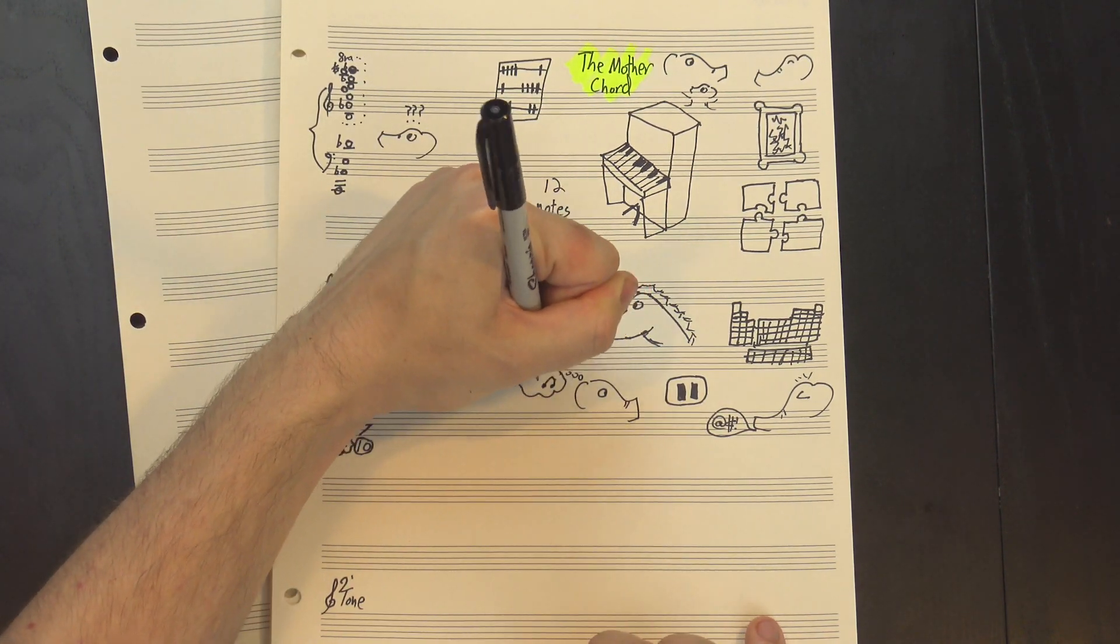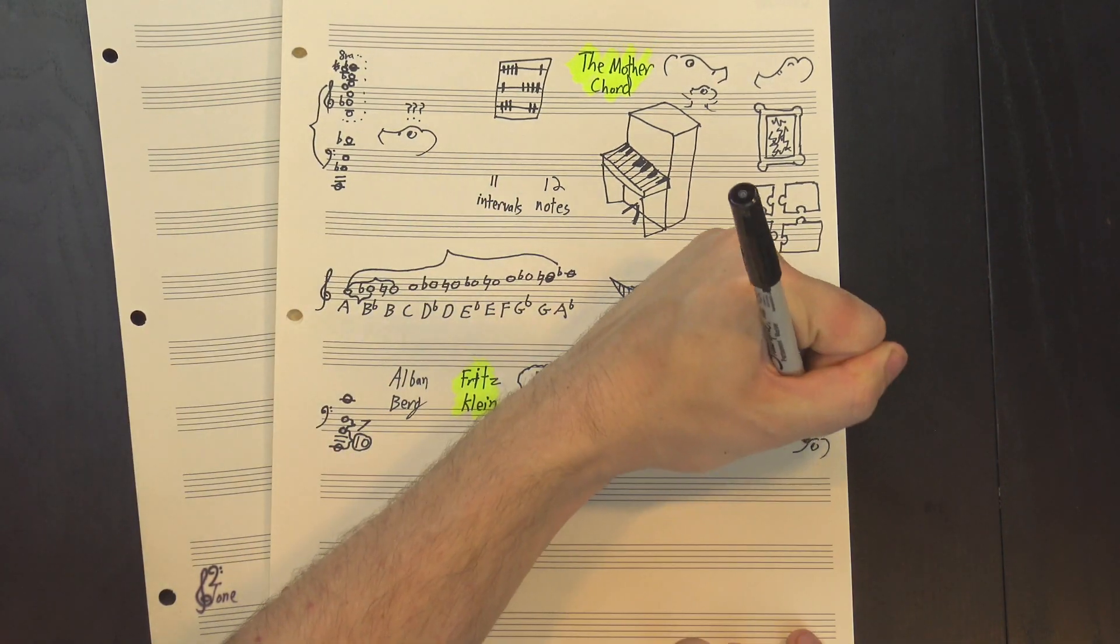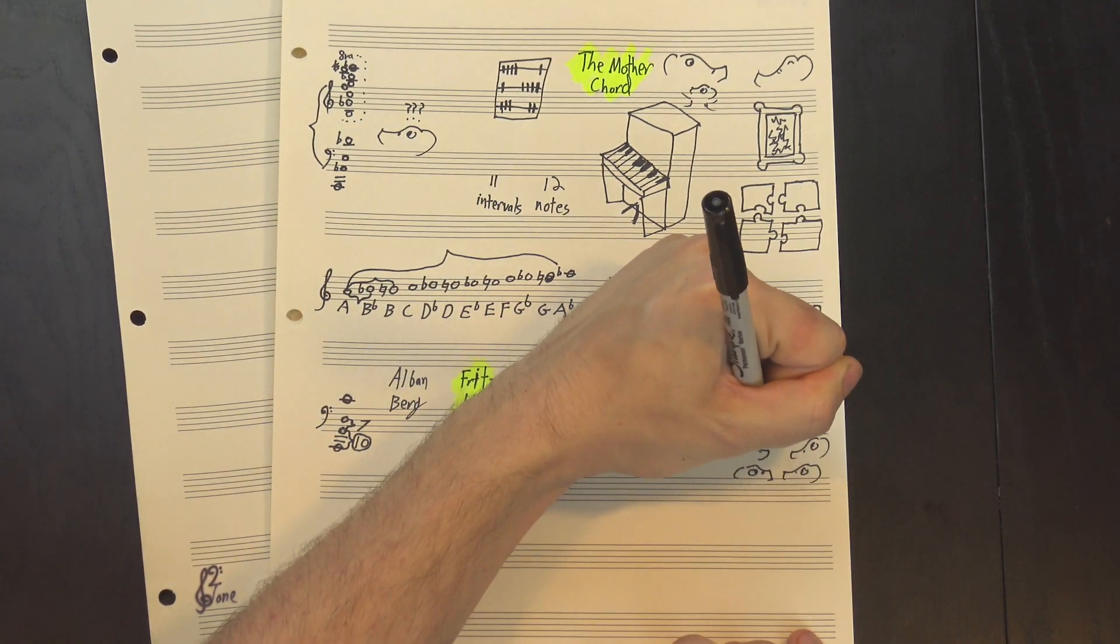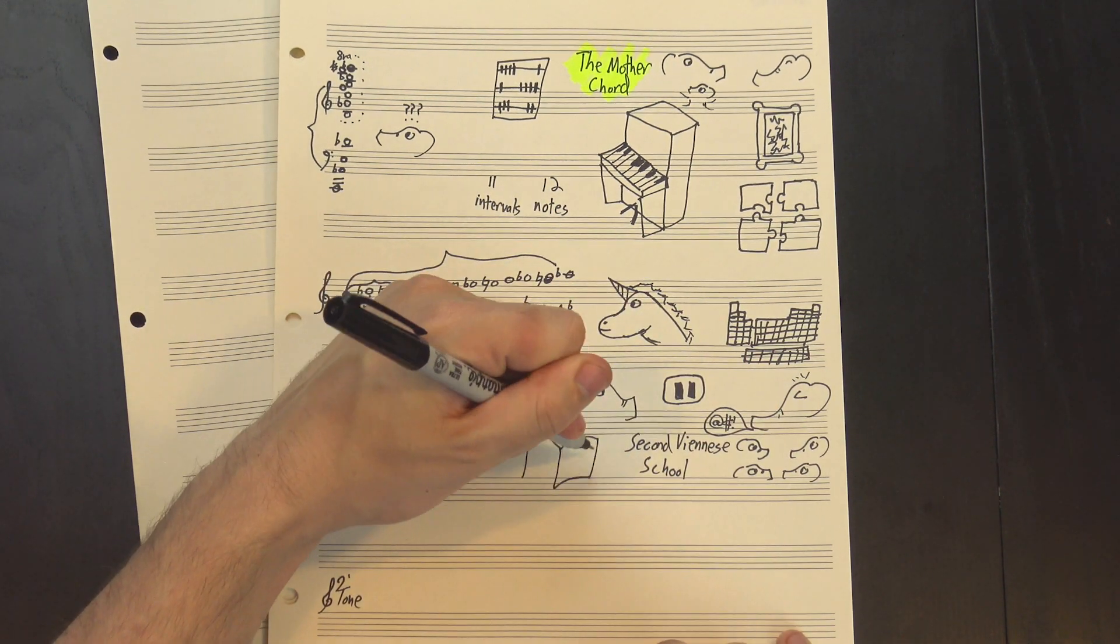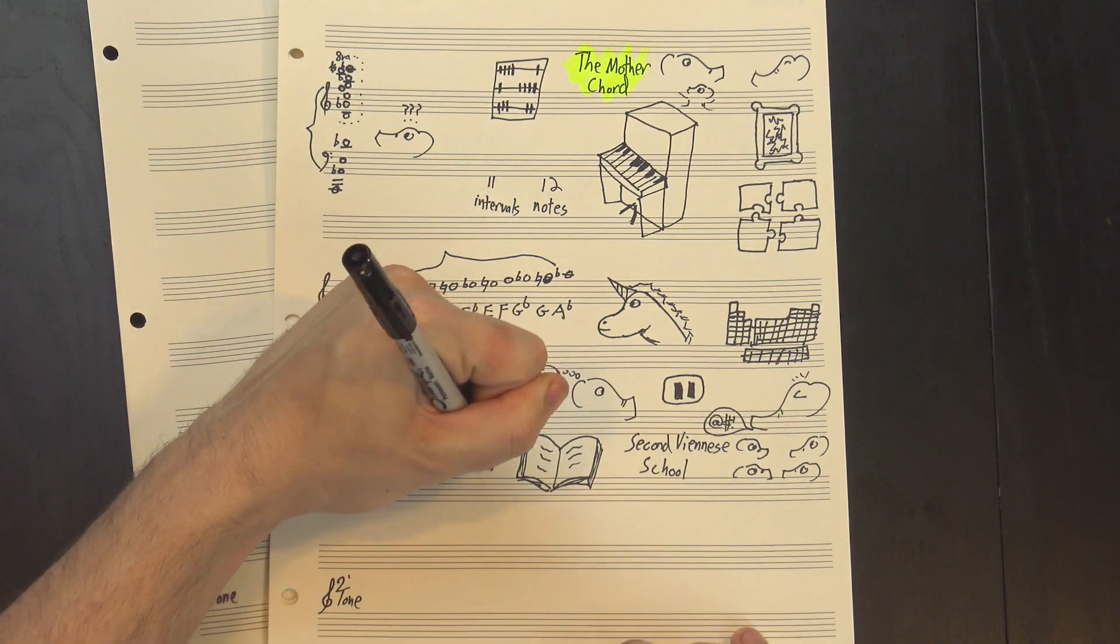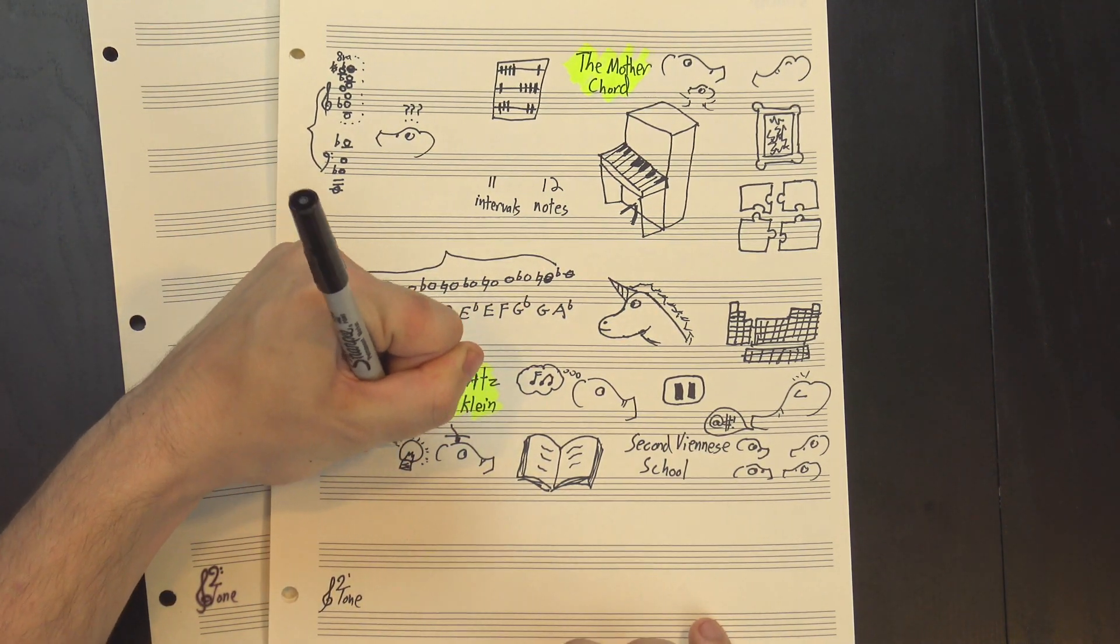This puzzle was both posed and solved by a composer named Fritz Klein, a student of Alban Berg. Berg is well known as a member of the famous circle of serialist composers known as the Second Viennese School. Klein's place in the history of serialism is a complex, messy story in its own right, but if you know your 20th century composition styles, you may have already figured out why he was asking this question.